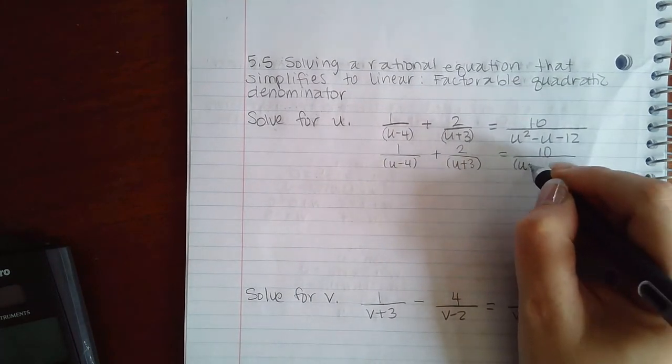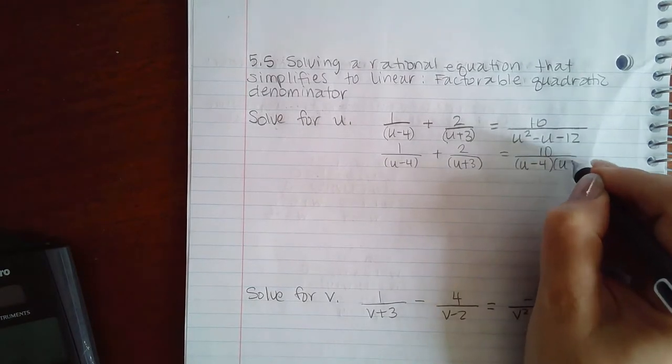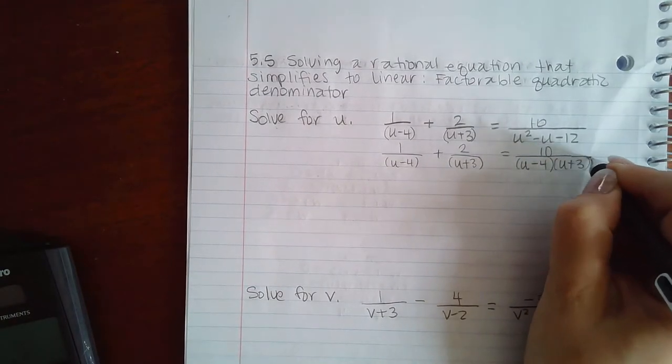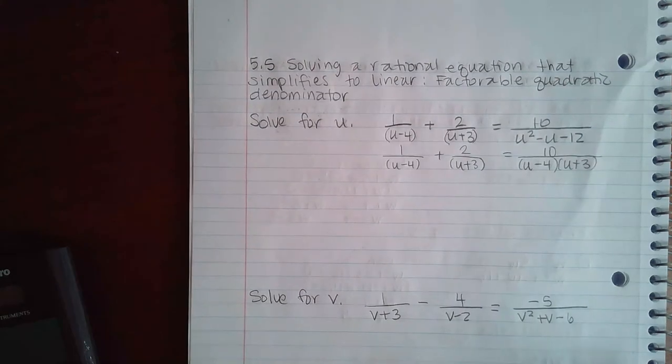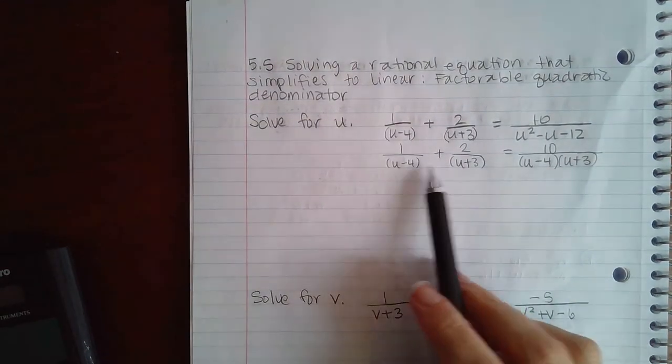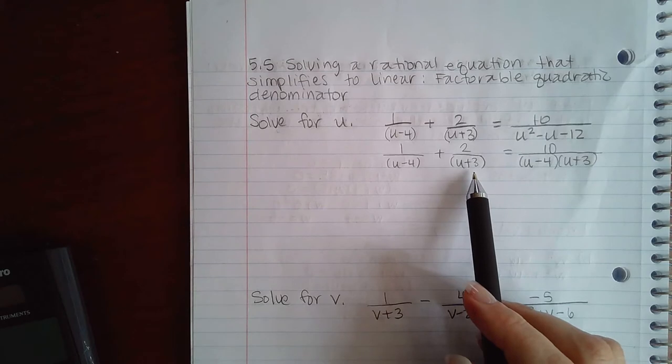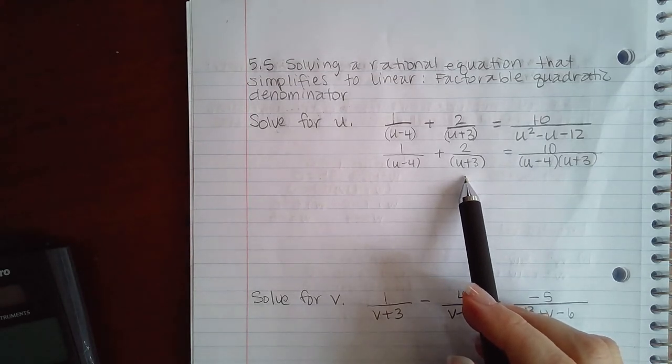So if I do figure out those factors, it would be u minus 4 and u plus 3. Now sometimes it's the same as the other two factors and sometimes it isn't, so you really have to factor it using your factoring methods or tools to figure out how that's going to work.